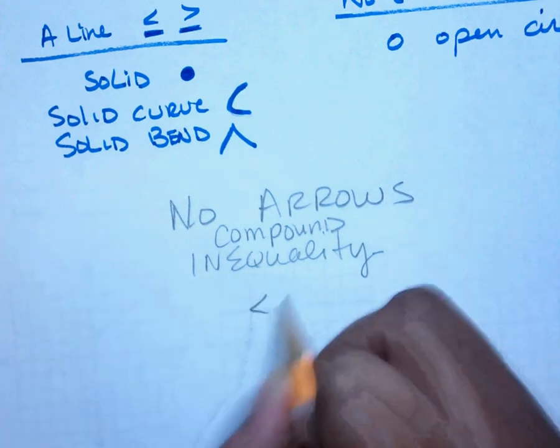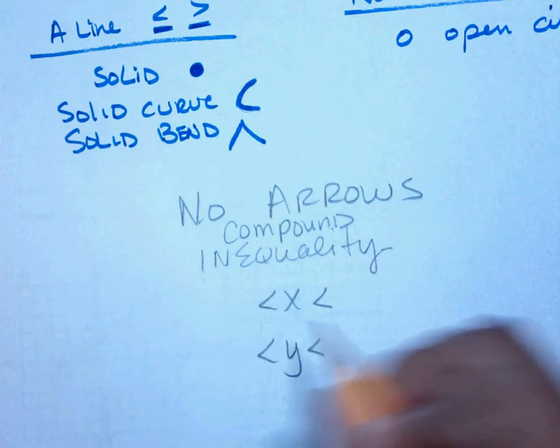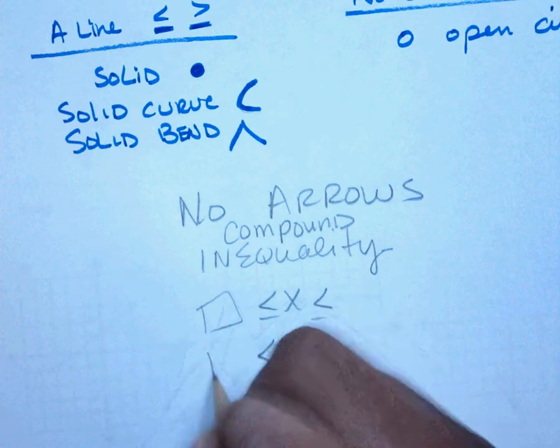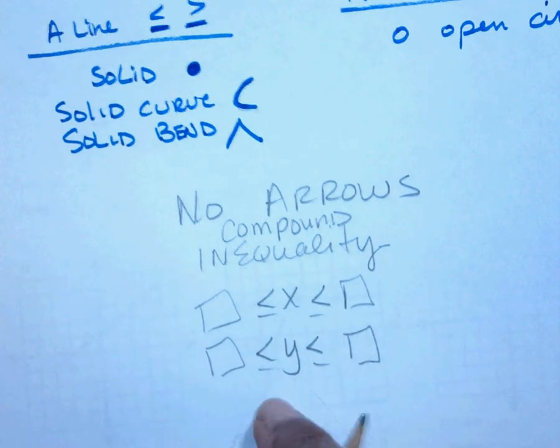Whenever you have to write this as a part of your answer, even when the lines are there or not, you can put your smallest number here, your biggest number here. This is what we call a compound inequality.